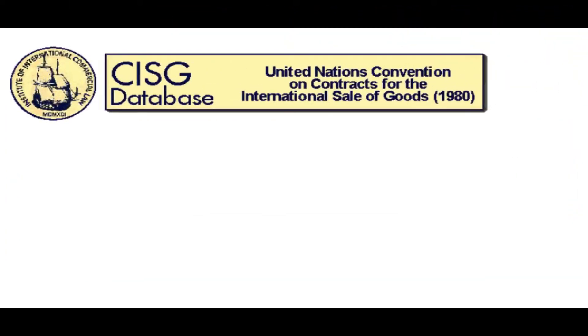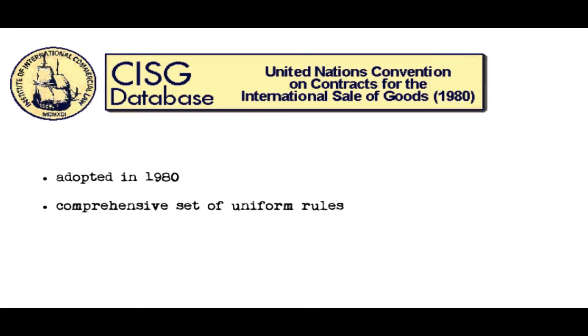The primary international law regulating the sale of goods across borders is a UN convention on contracts for the international sale of goods, commonly called the CISG. It was adopted in 1980. The purpose of the CISG is to provide a comprehensive set of uniform rules, to be applied by all member states, and which contracting parties can rely on as binding.